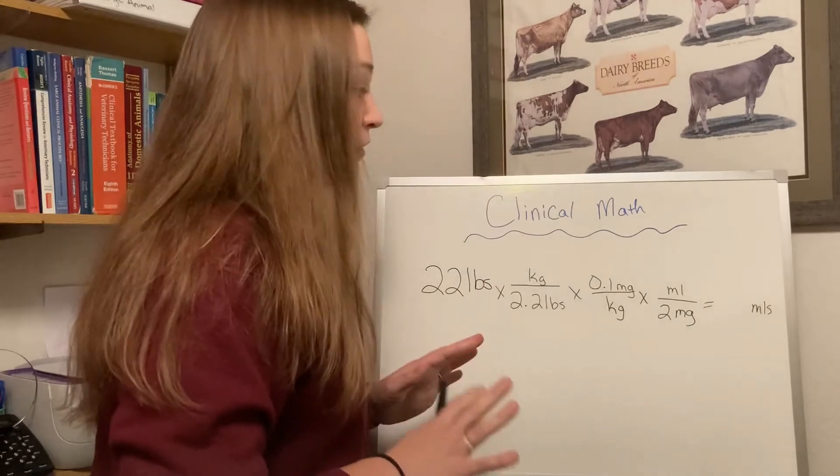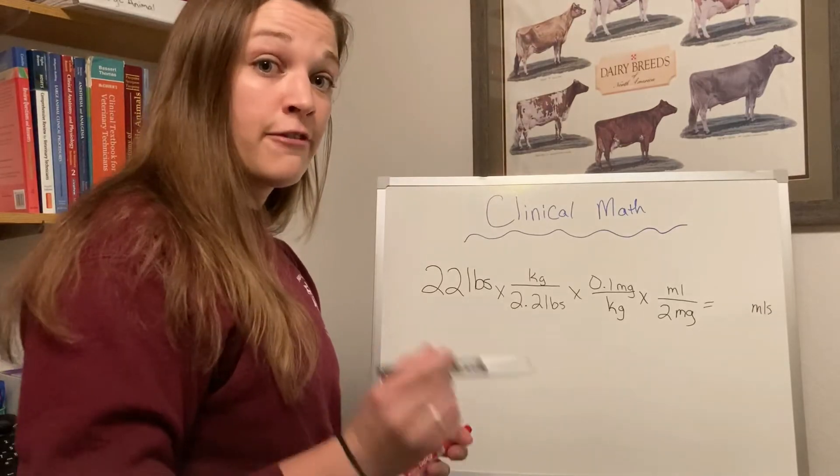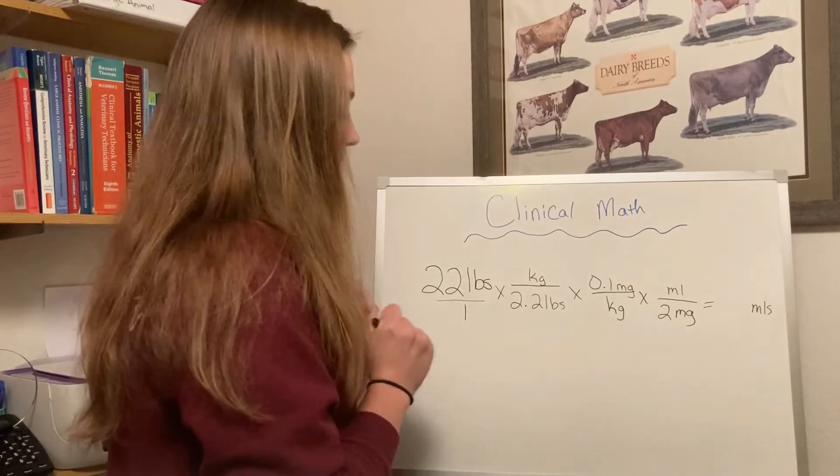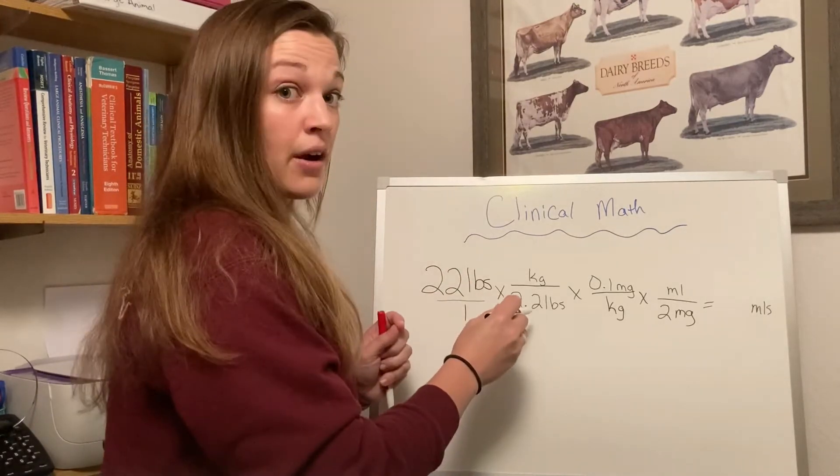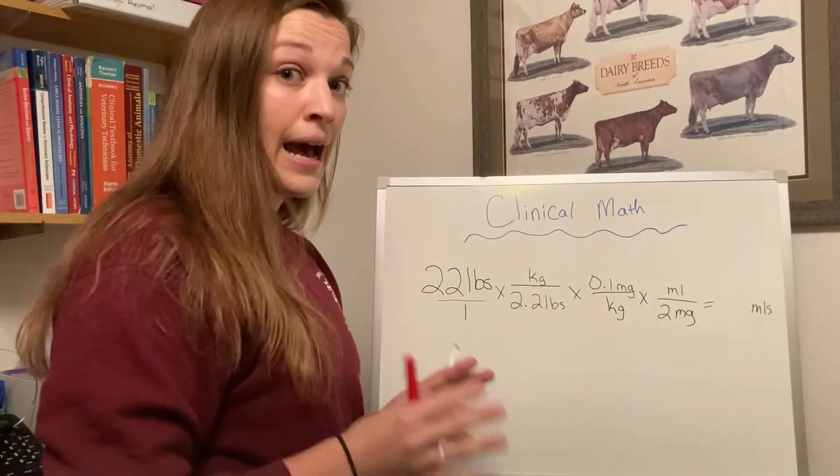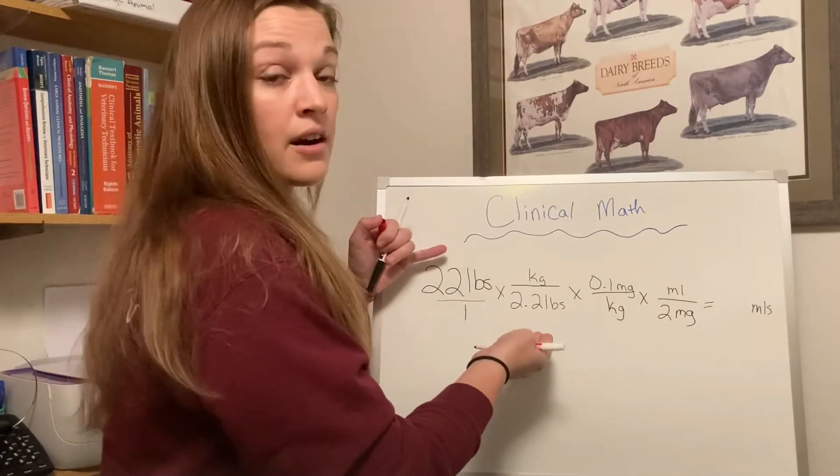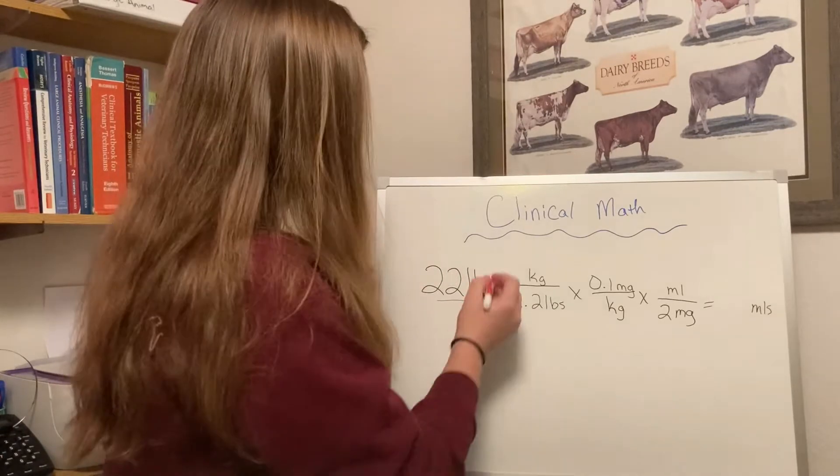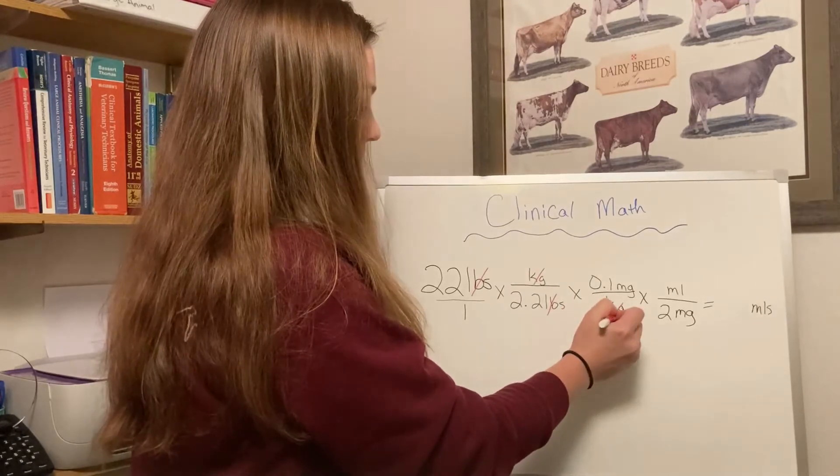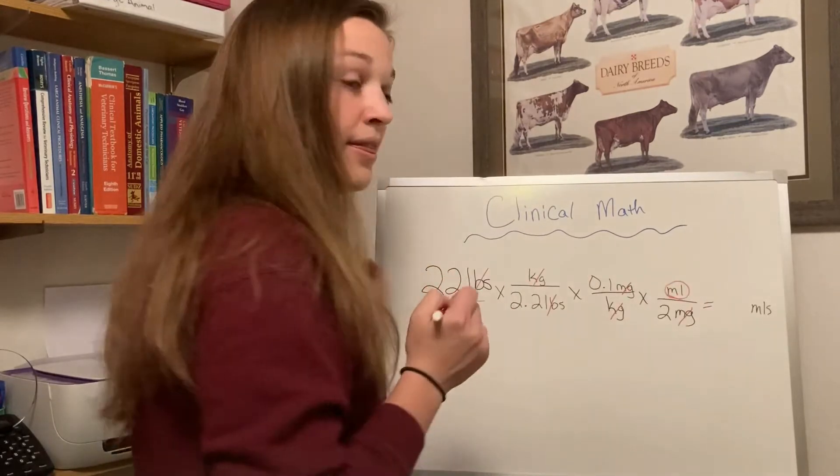Some reviews and reminders from the first one on how the dimensional analysis works. Remembering the rules of our fractions, whole numbers are represented over 1, and then we're going to divide by numbers that are on the bottom and multiply by numbers that are on the top. And the way that things work out to get us from pounds into mLs, our labels that are opposite cancel each other out. So pounds, pounds, kilograms, kilograms, milligrams, milligrams, and then we're left with our mLs.